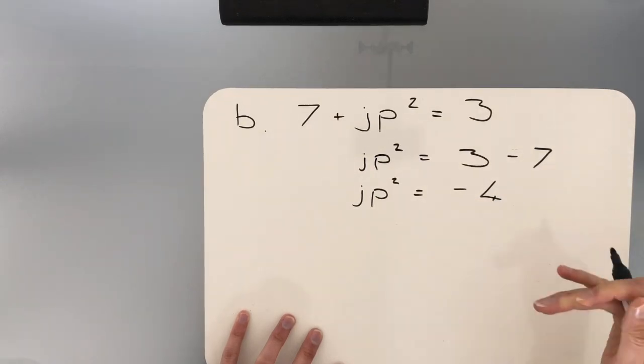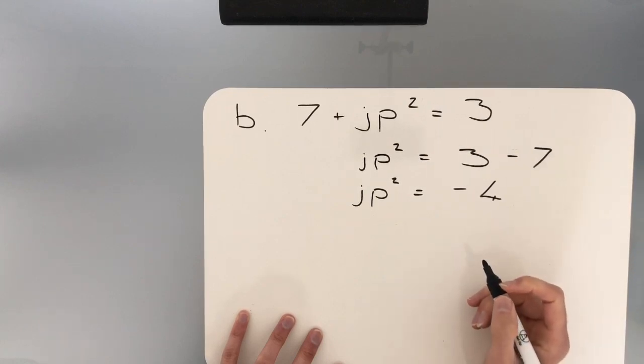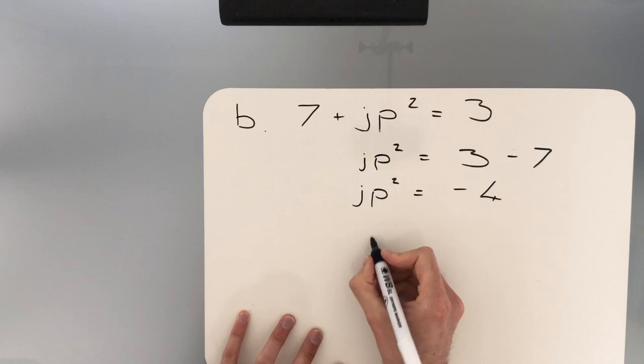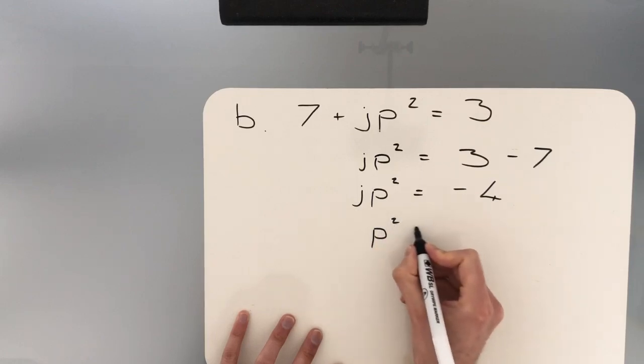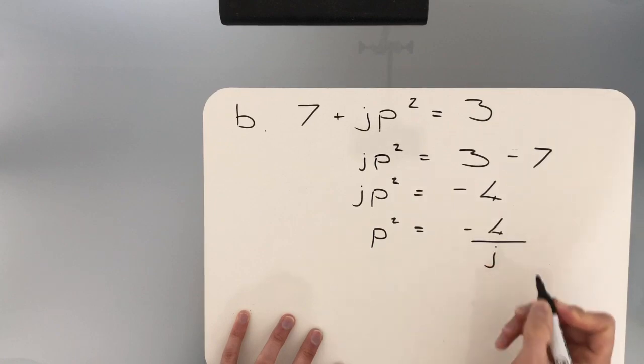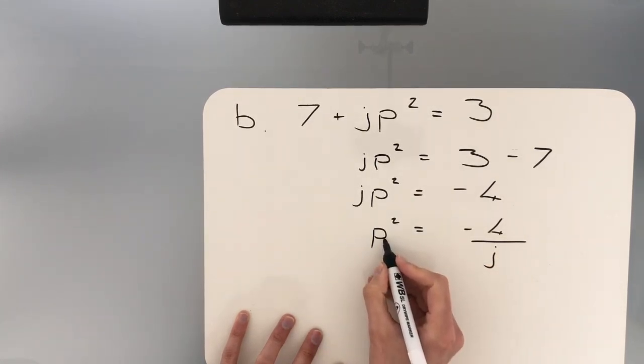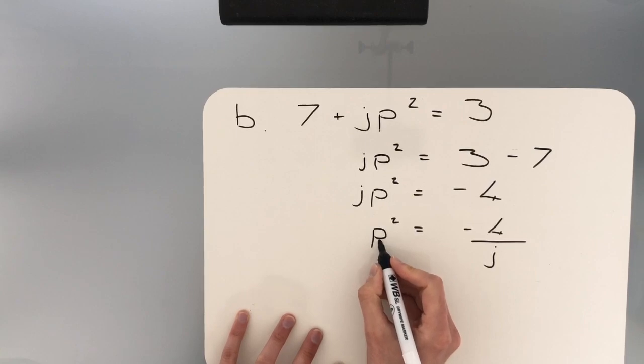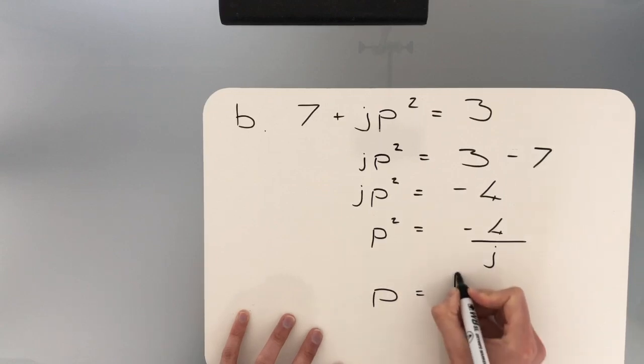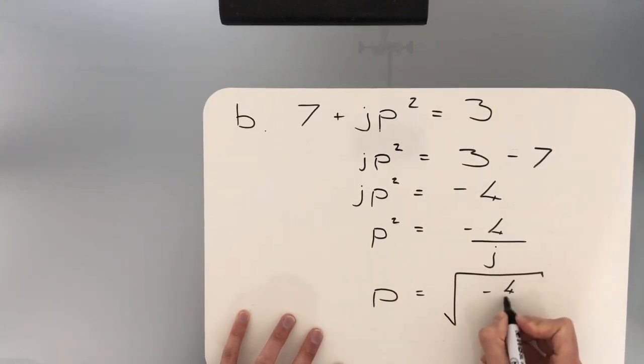Next, we've dealt with anything that was adding and subtracting. So now we're going to deal with anything that's either multiplying or dividing. The letter J is multiplying the P squared. So P squared will be equal to negative 4 divided by J. Finally, we now want to leave just a letter P on its own to be the subject of the formula. It's currently being squared. So the opposite of squaring would be square root. So P is equal to the square root of negative 4 over J.